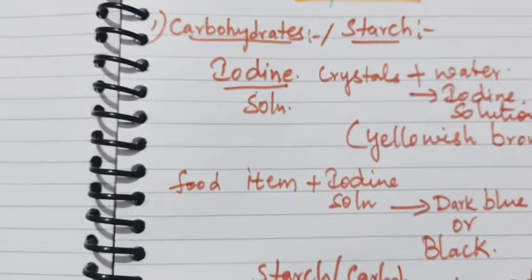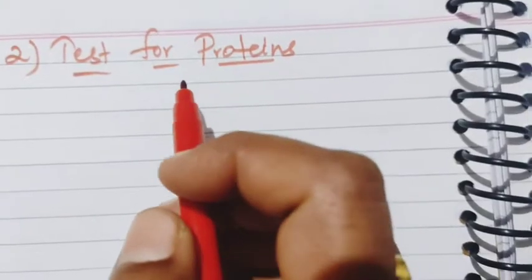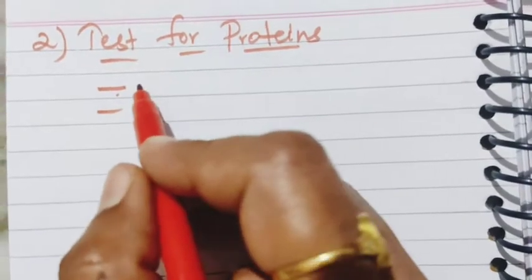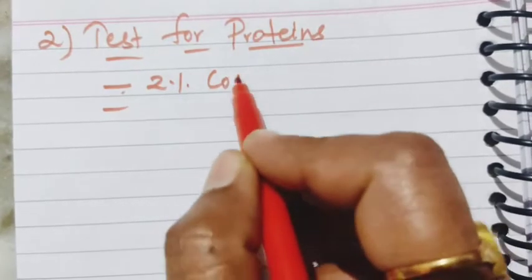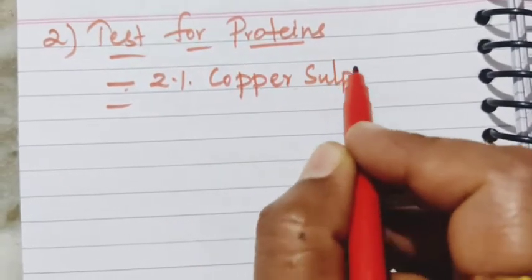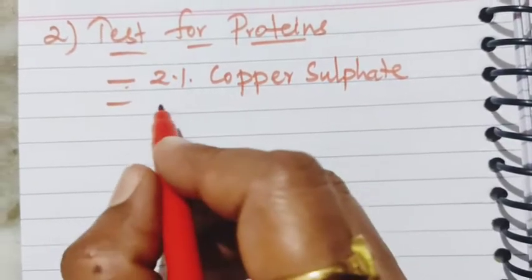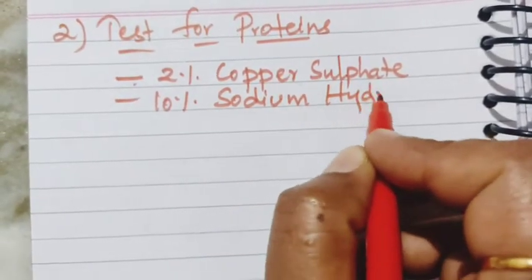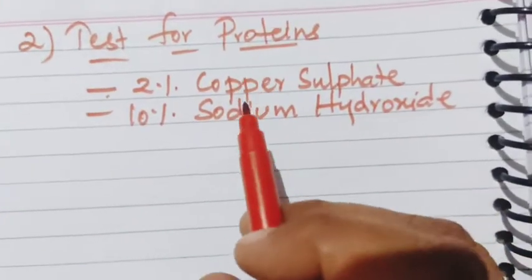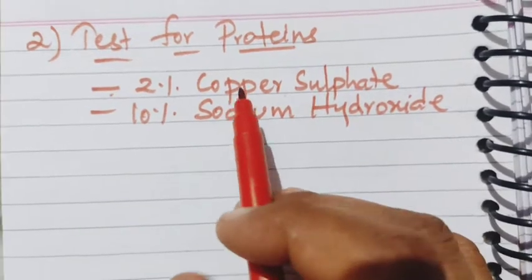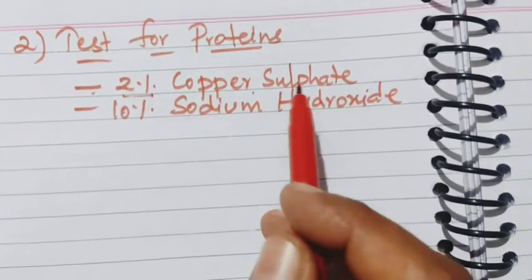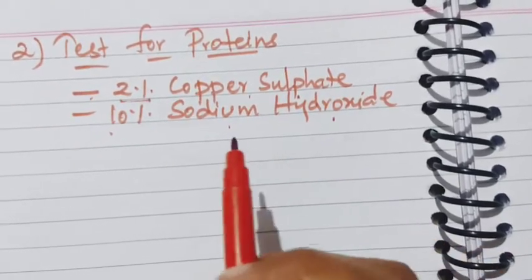Next, we will see the test for proteins. The second test is the test for proteins. For testing proteins, we need two chemicals: 2% copper sulfate solution and 10% sodium hydroxide. These two chemicals are required for testing whether food items contain proteins or not. We have to prepare both the 2% copper sulfate and 10% sodium hydroxide solutions before conducting the test.